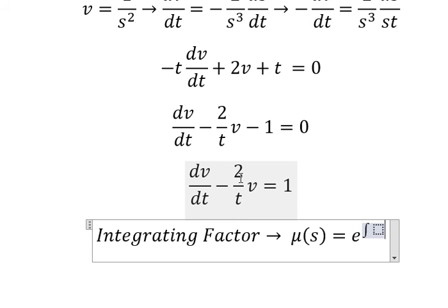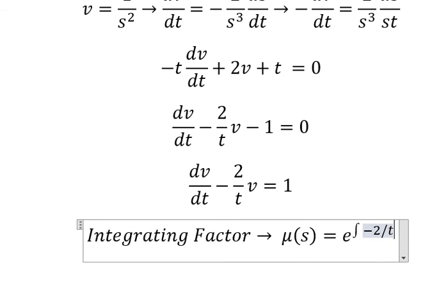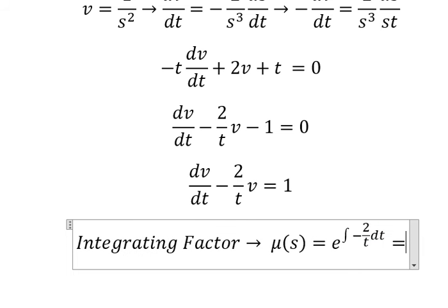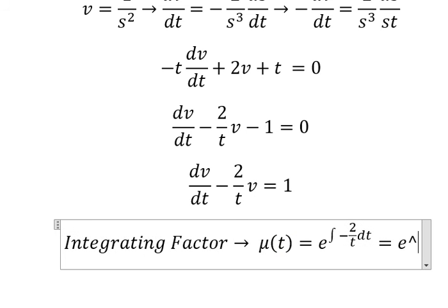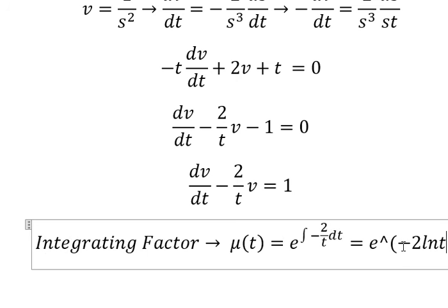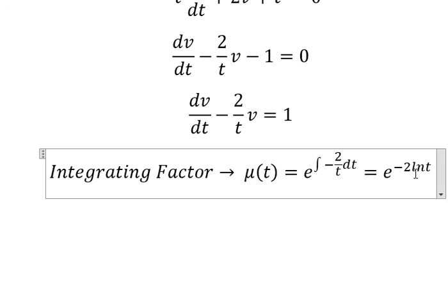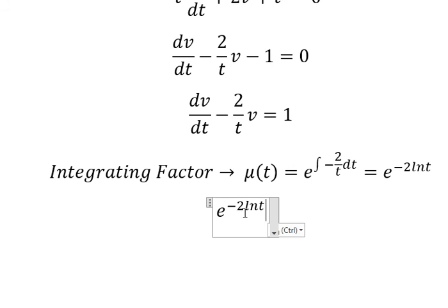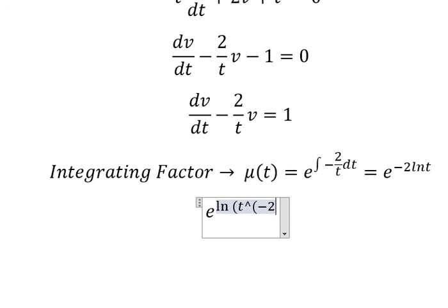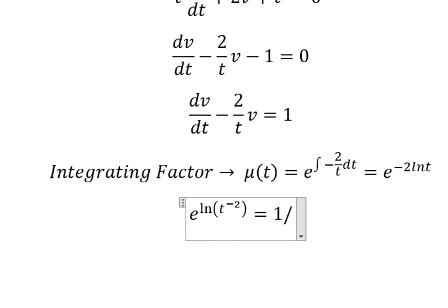We see that we have negative 2 over t, so we put this into the exponent. So we have e to the power of negative 2 times ln t. We put the negative 2 inside the natural log, and we get 1 over t squared.